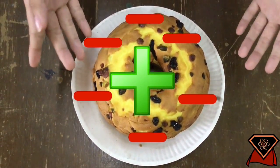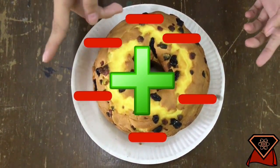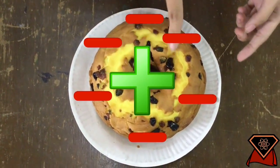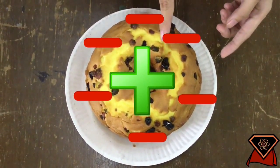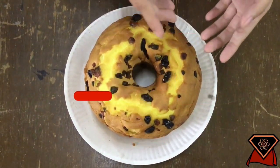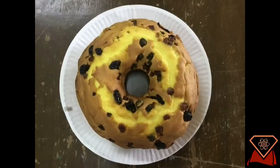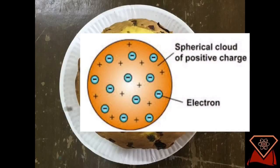The electrons were thought to be positioned throughout the atom in rotating rings. In this model, the atom was also sometimes described to have a cloud of positive charge. That is how the plum pudding model of Thompson works.